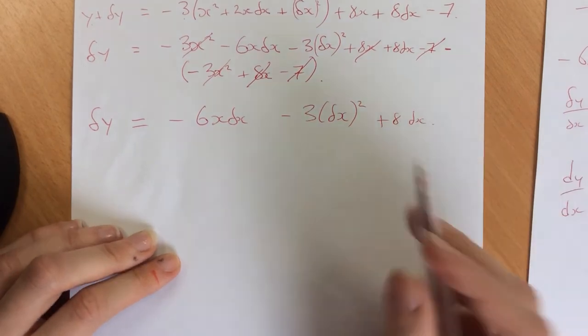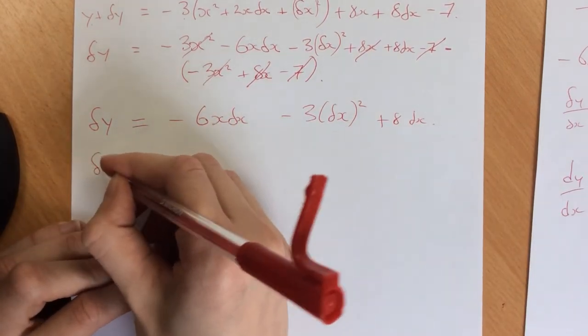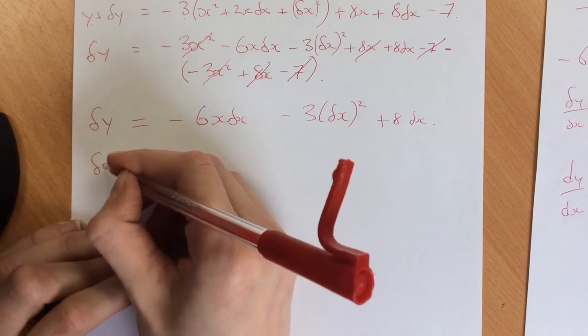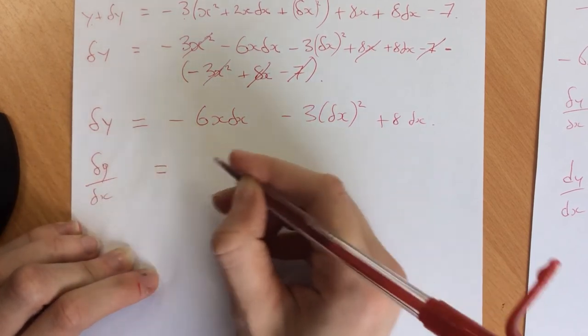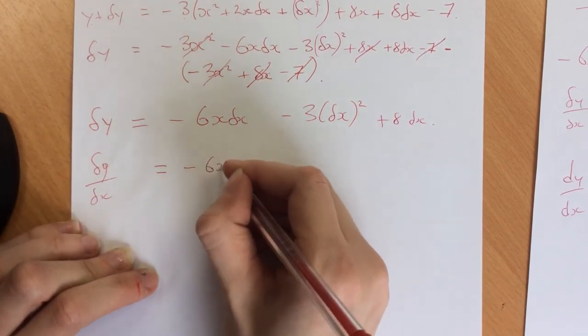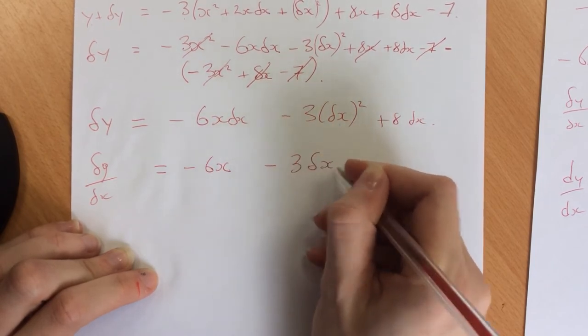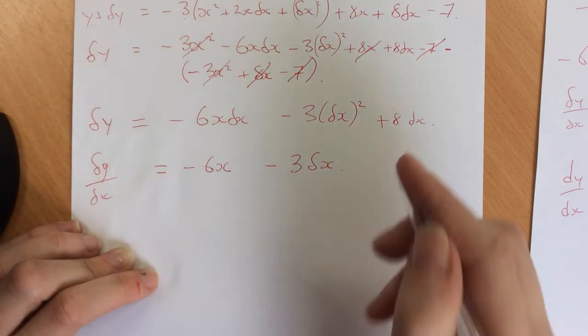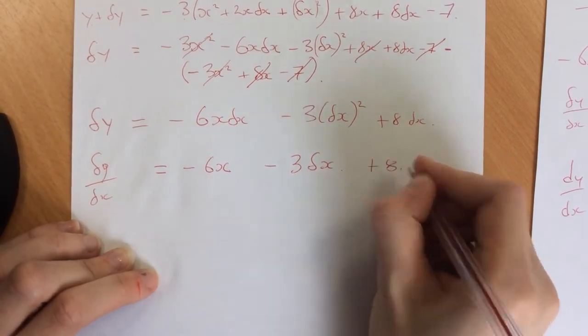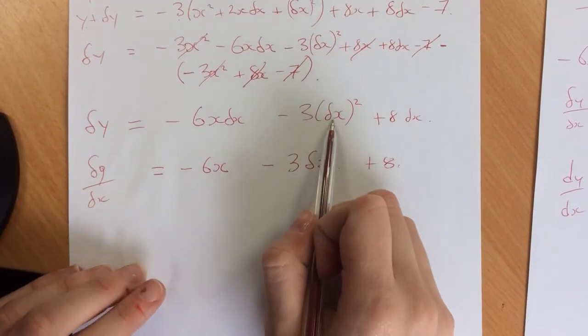Now I want to get rid of the delta x's, so I'm going to divide through by delta x. So I get δy/δx = -6x - 3δx + 8. Only one of those delta x's goes.